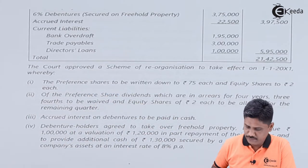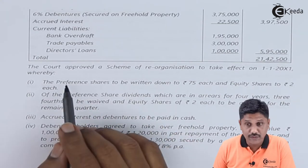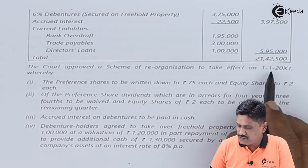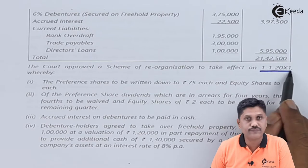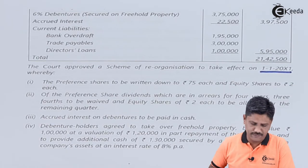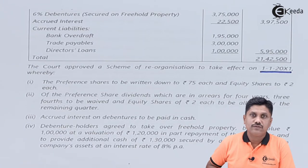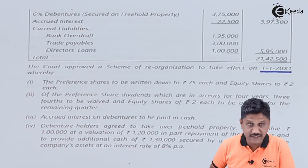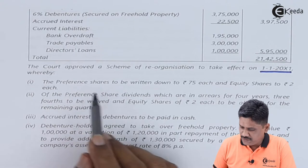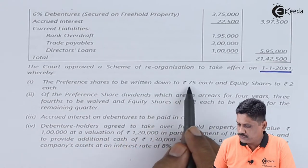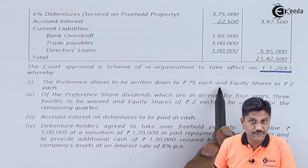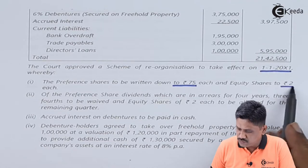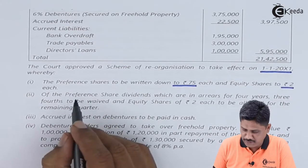The Court has approved a scheme of reorganization to take effect on 1st January 20X1. Let us read the scheme one by one. Preference Shares are to be written down to Rs.75 each, and equity shares are to be written down to Rs.2 each. Since shares are written down, there will be a profit to the company.